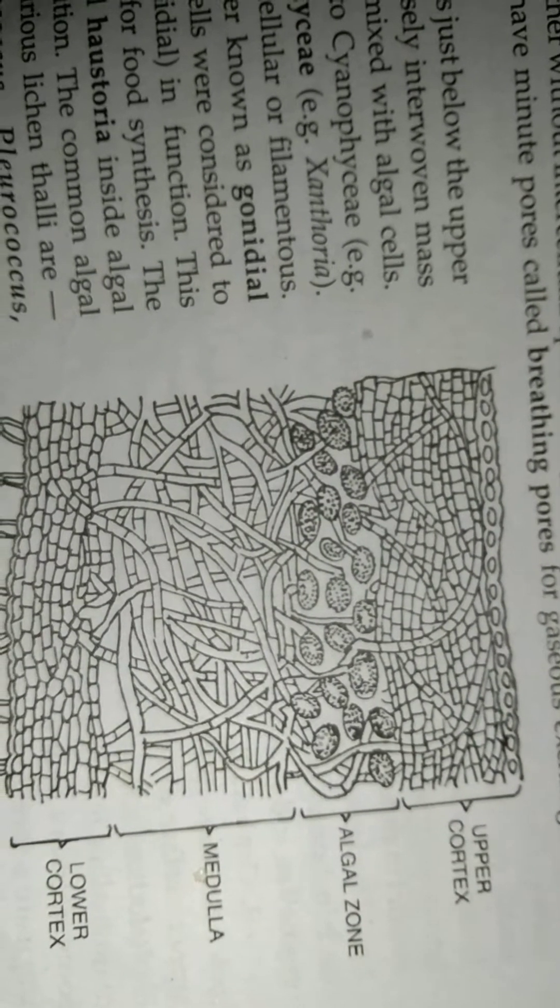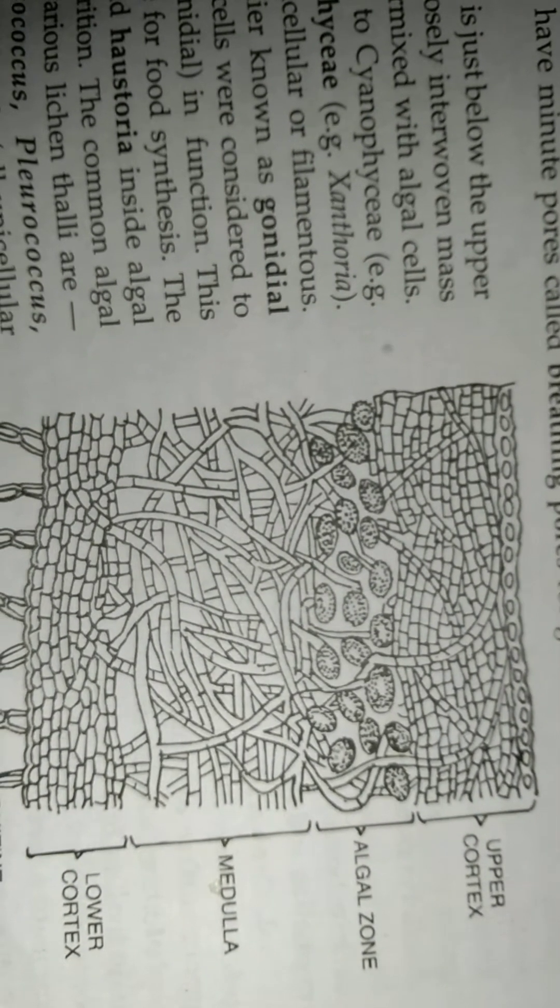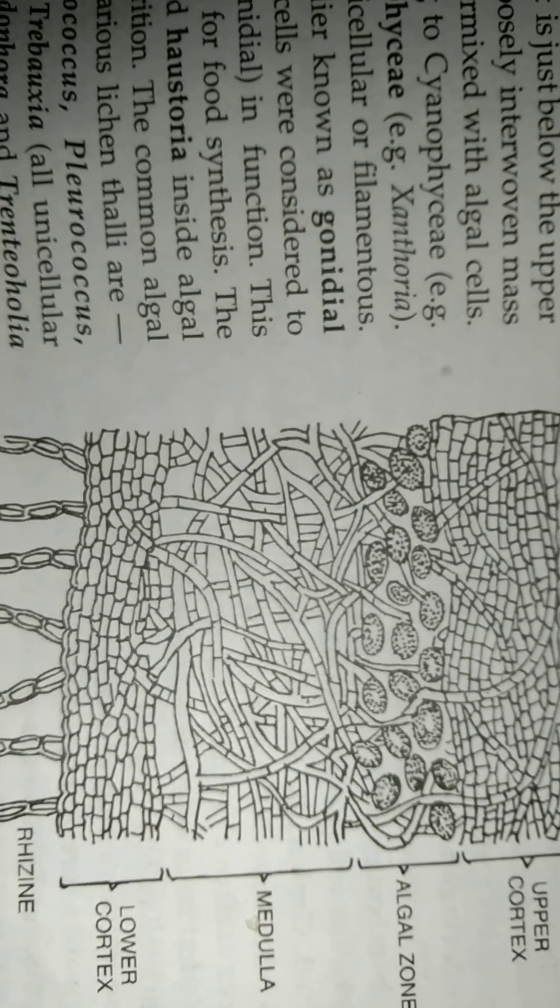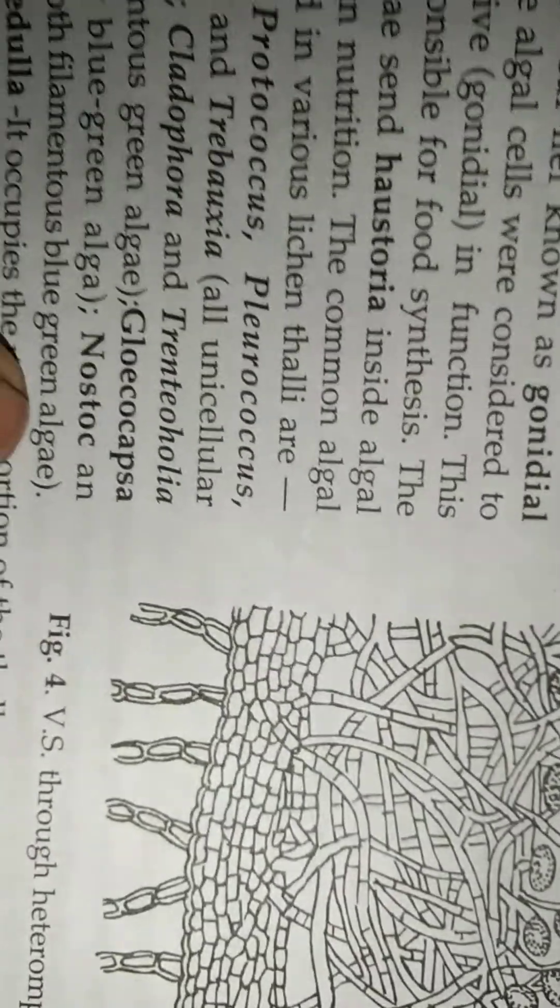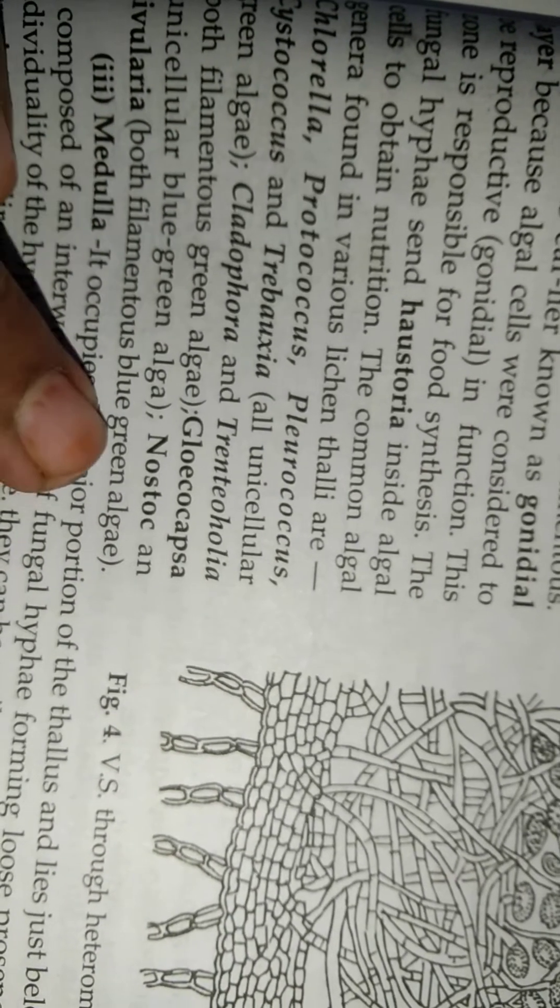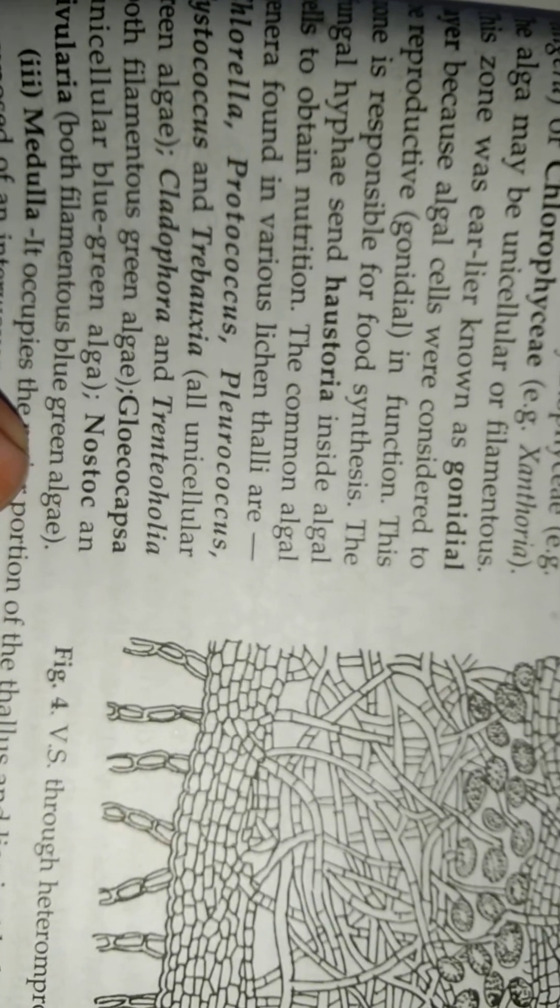And Cladophora and Trentepohlia, these are filamentous green algae. And Gloeocapsa, unicellular blue-green algae. And Nostoc or Rivularia, both are filamentous blue-green algae are found in this type of lichen.